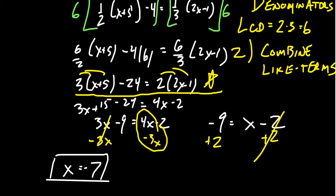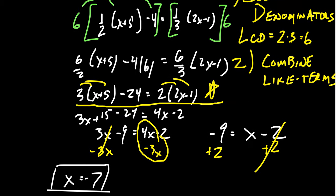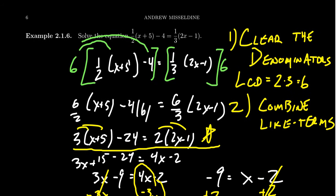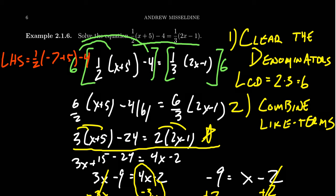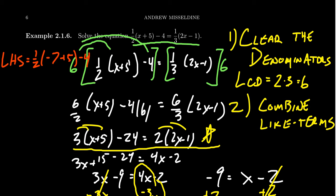Good practice here would be to check our solution. We want to check to make sure we have the right answer. Coming back to the original equation, we plug the number back into that situation. Check the left-hand side: 1/2(x+5) - 4 where x is -7. Negative 7 plus 5 would be negative 2. So we get 1/2 times -2 minus 4. 1/2 times -2 is -1 minus 4, which gives us -5. That's what we think the left-hand side should be.